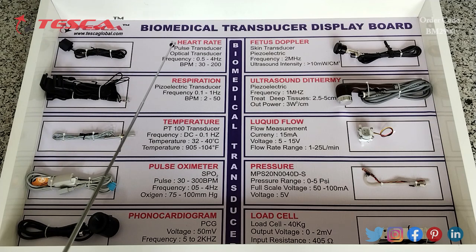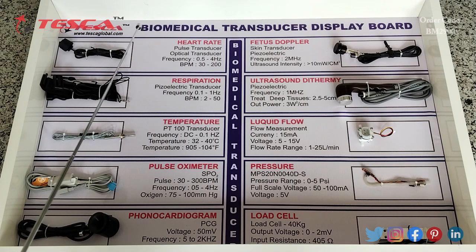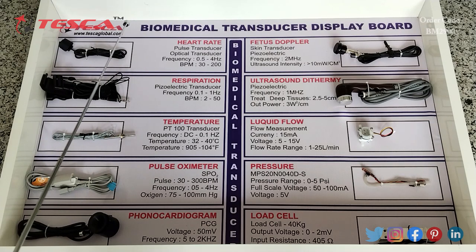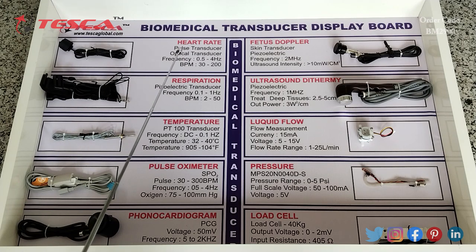First is the heart rate transducer. It is a type of pulse transducer. Its frequency range is 0.5 to 4 hertz and BPM range is 30 to 200.